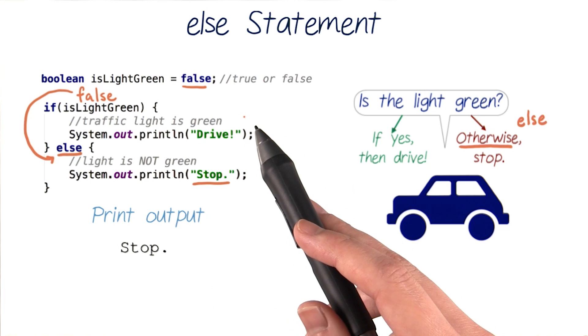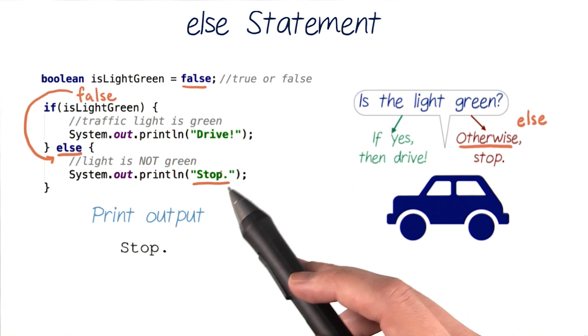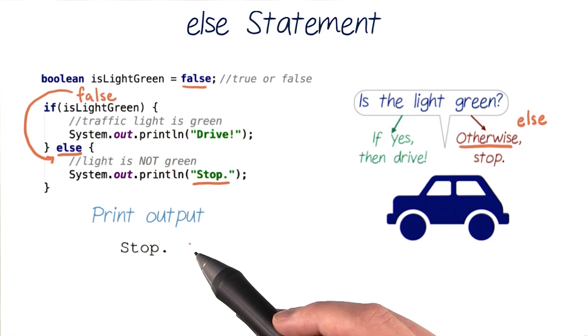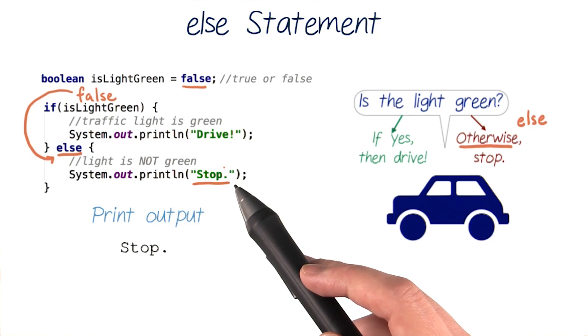Otherwise, if it's false, this will fail our if test condition and go into our else statement block of code instead, and this will print out stop. So again, only one of these blocks of code will be executed when you run this code. Either the code in the if, or the code in the else.